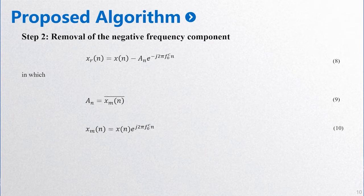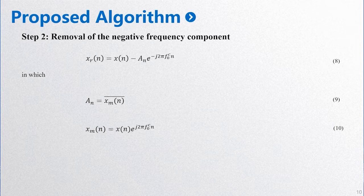Step two is removal of the negative frequency. The signal obtained by removing the negative frequency component from the received signal x(n) is formula eight, and the expressions of its related components are formula nine and formula ten.